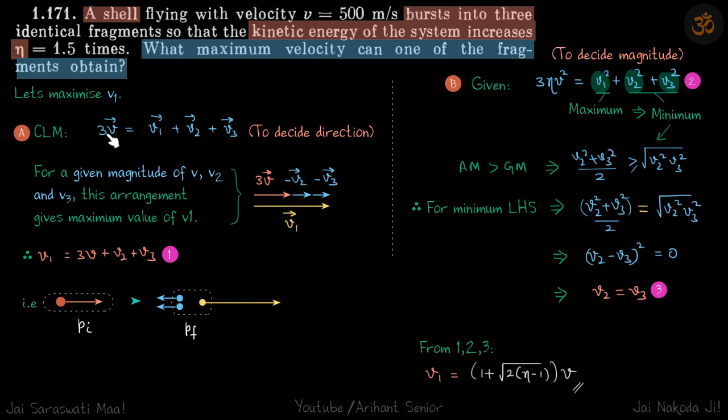Because they have given v vector and they have given η, we'll use this equation to decide direction if magnitudes are known, and we will use this equation to determine magnitude if directions are known. So individually we will use these equations to optimize such that we get maximum value of v1.